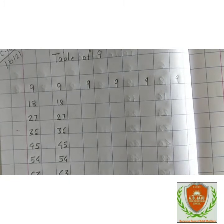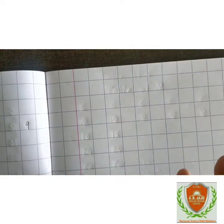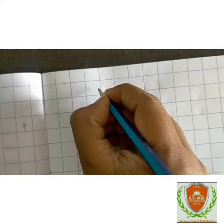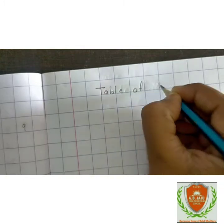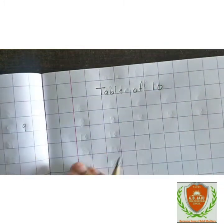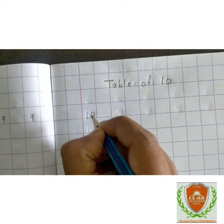Now we will see table of 10. On the second page we will learn the table of 10, which is very easy. Let's start, repeat after me. 10 ones are 10.